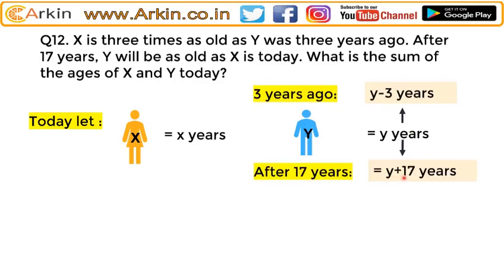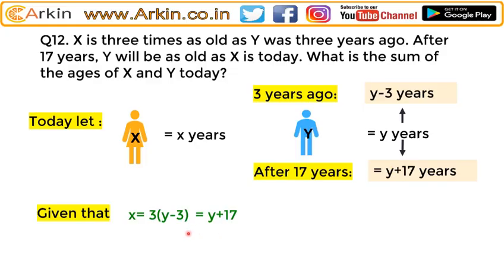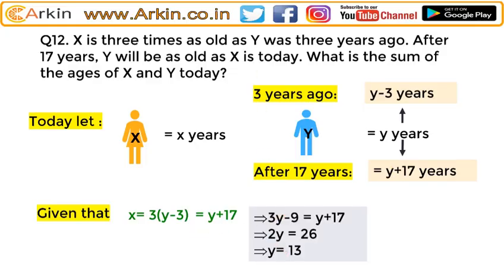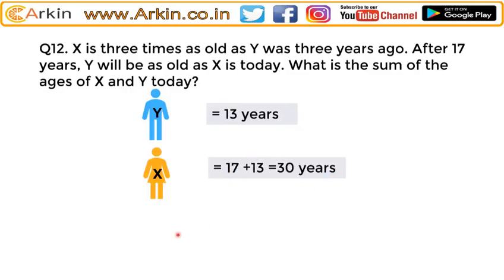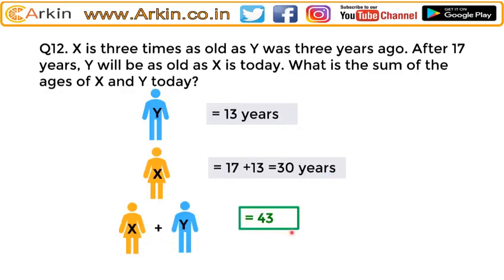X equals three into (Y minus 3), and Y plus 17 equals X (since after 17 years Y will be as old as X is today). Solving these equations, we get Y equals 13, which means X equals 17 plus 13 = 30 years. So the sum of X and Y's ages will be 43 years.